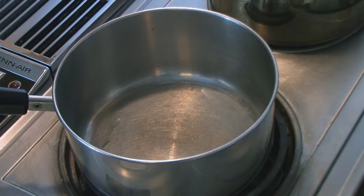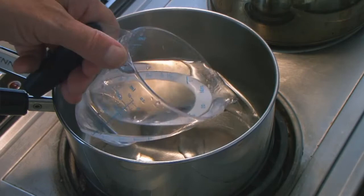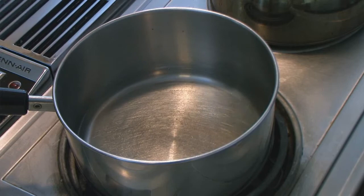That container holds about a cup. So I'm going to put one cup of water in a pan and add one quarter cup of plain white sugar. Don't use any other kind of sugar. So now we're going to bring this to a boil and boil it for about two minutes.